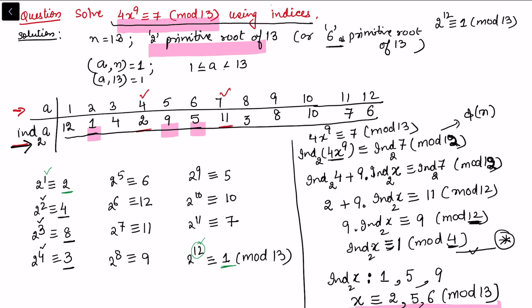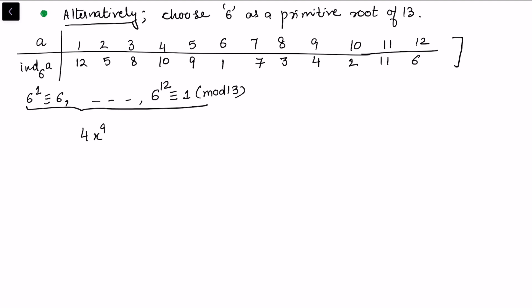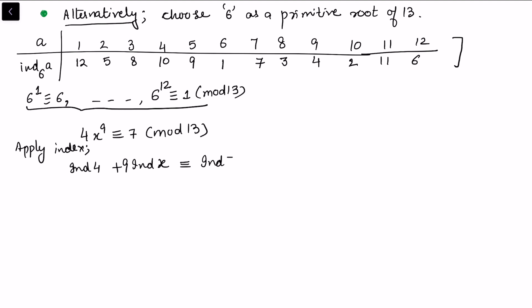Now let's repeat this question with an alternate solution choosing 6 as a primitive root instead of 2. I have constructed the index table using powers of 6: 6 to the power 1 is congruent to 6, through to 6 to the power 12 which is congruent to 1 mod 13. We then return to our congruence: 4 times x to the power 9 congruent to 7 mod 13. Taking indices on both sides with respect to primitive root 6 gives: index of 4 plus 9 times index of x congruent to index of 7, mod 12.